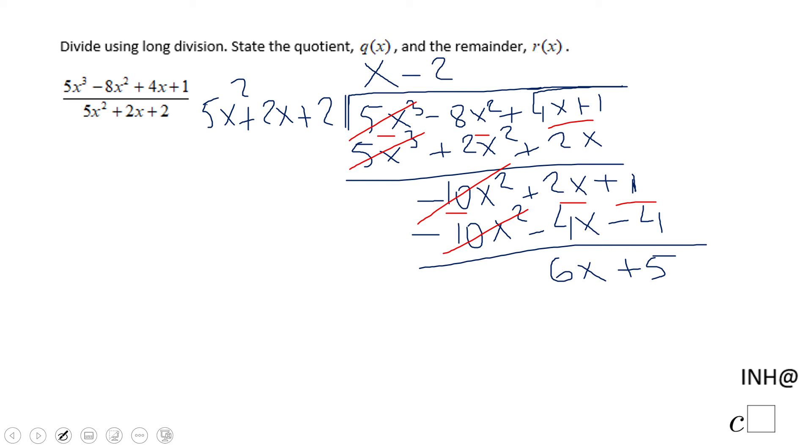We're going to stop here because the degree of this remainder is less than the degree of what we divide by. Degree 1, degree 2.